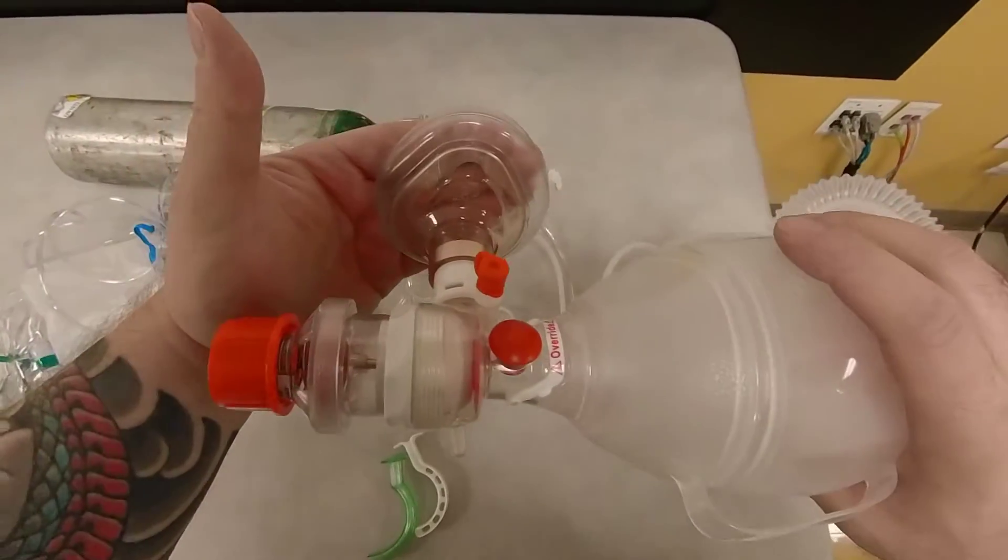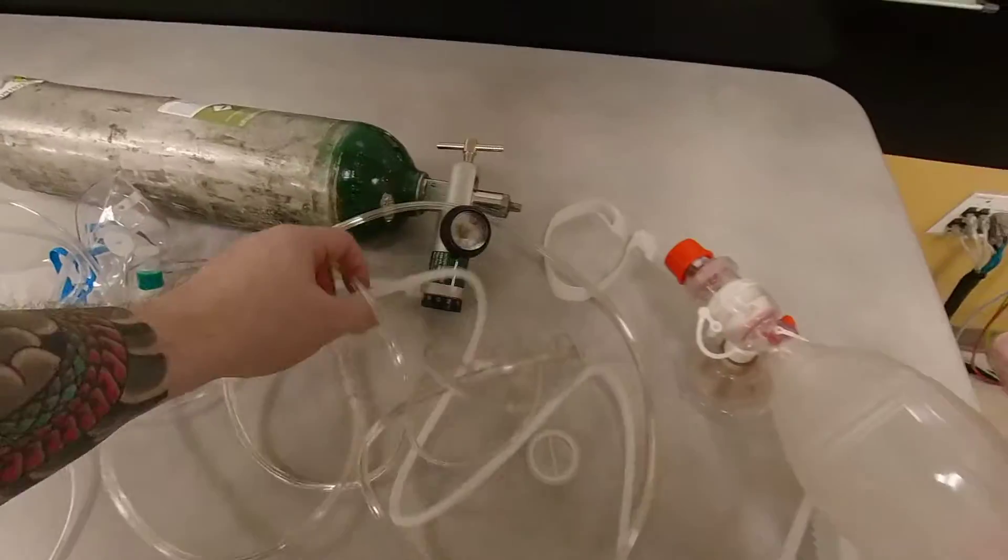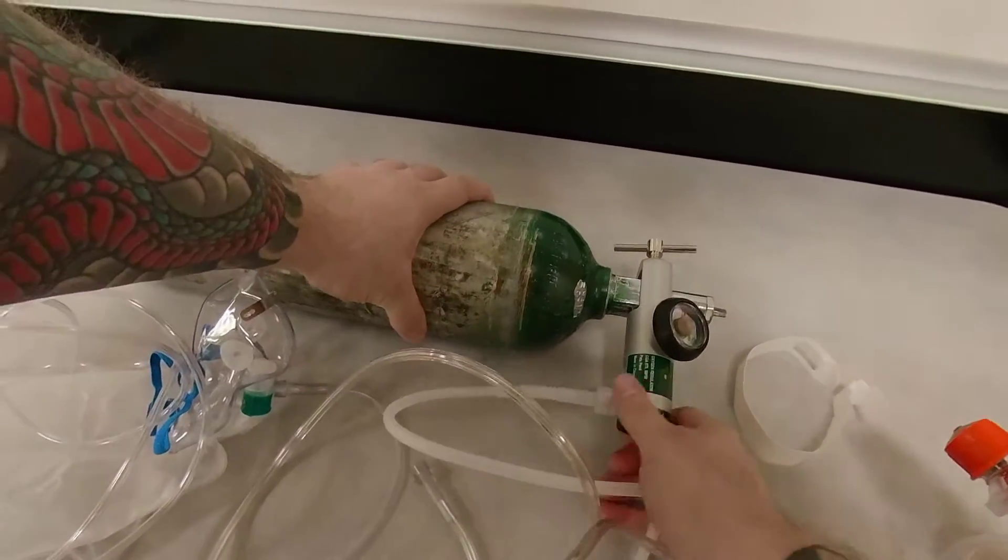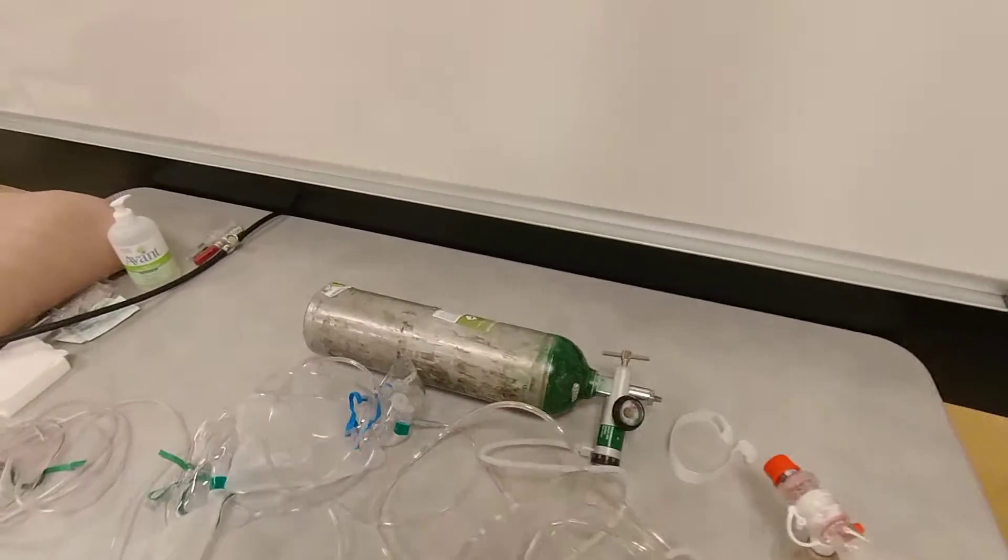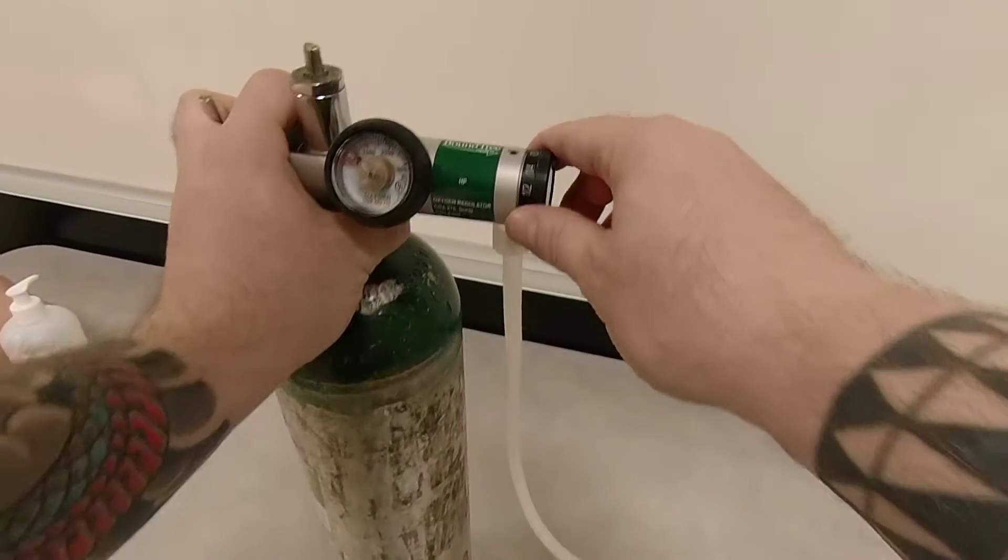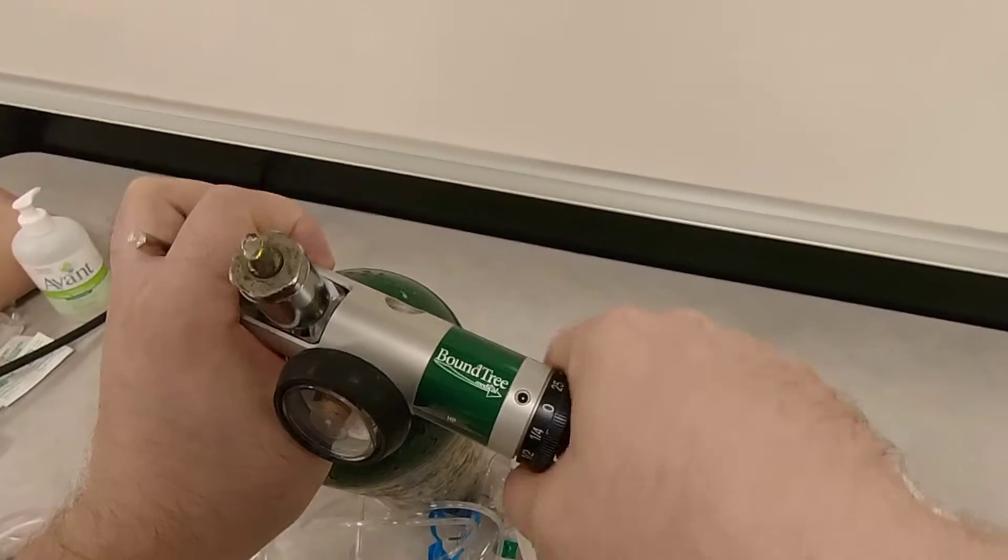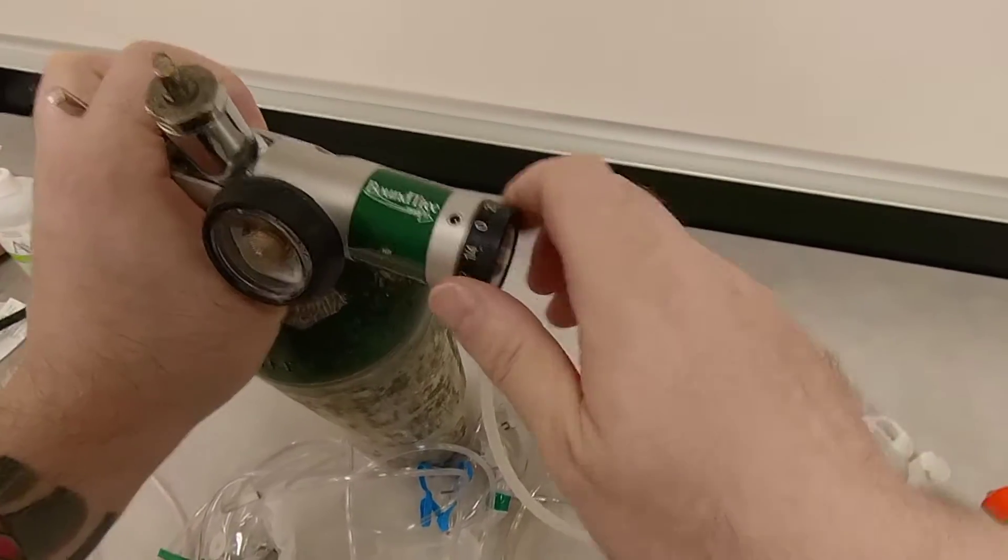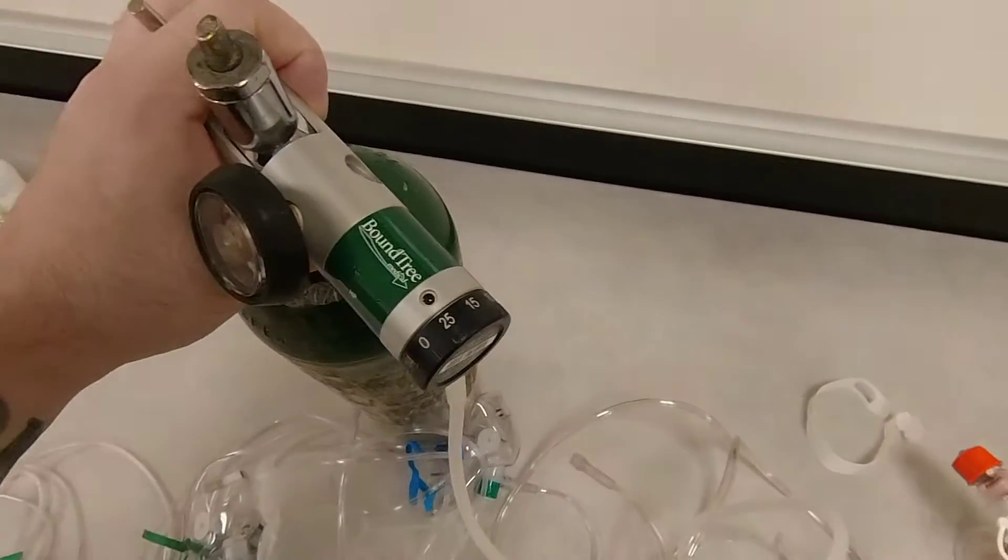Now, this device can give you greater than 90% FiO2 at 15 liters per minute. Now, they did a study in JAMA, and it was titled Flush Rate Oxygen for Emergency Airway Pre-Oxygenation by Driver in 2016. And what they did is they wanted to see if they increased your flow of oxygen. So they had oxygen regulators in the hospital that were able to exceed the 15 liters per minute. They were able to go above 40. And here on my regulator, I can go as high up as 25. You see it here.